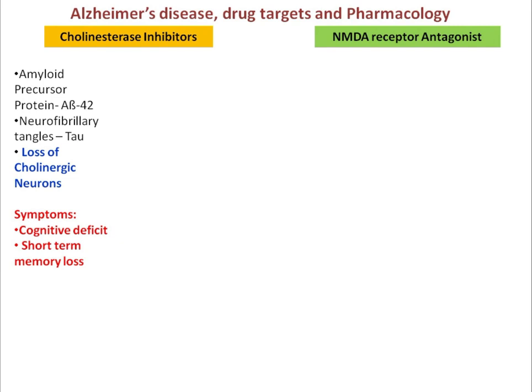Alzheimer's disease is mainly a condition where there is loss of cholinergic neurons inside the hippocampus and frontal cortex of the brain. The major pathogenesis involves amyloid precursor protein, specifically beta-amyloid 42, and neurofibrillary tangles depositing tau protein. This leads to cognitive deficit and short-term memory loss, which are the major symptoms associated with Alzheimer's disease.